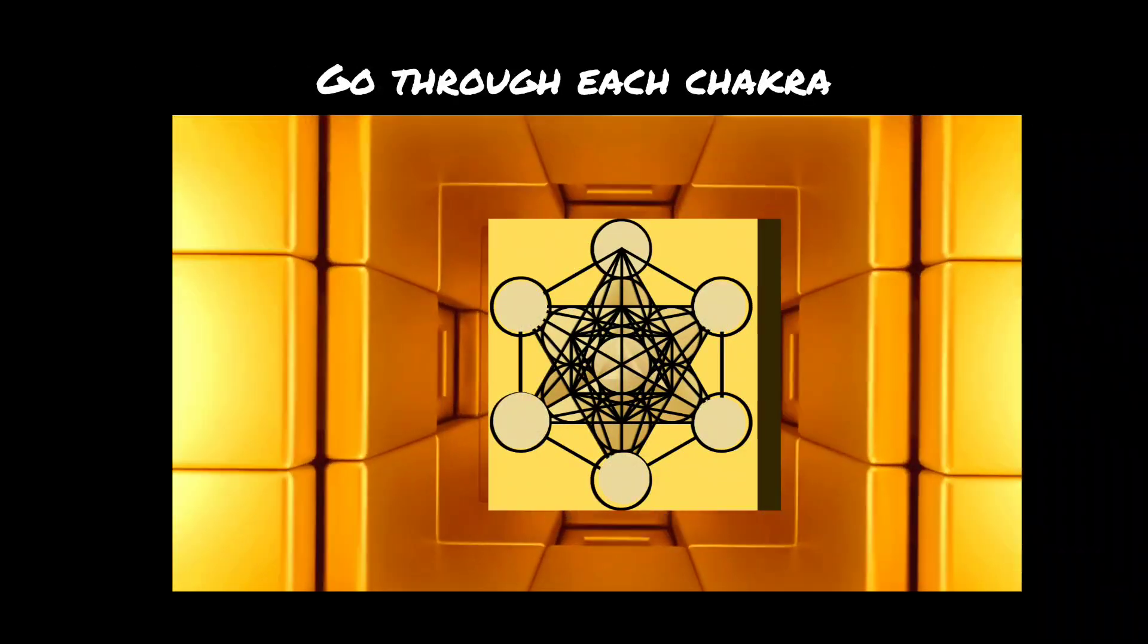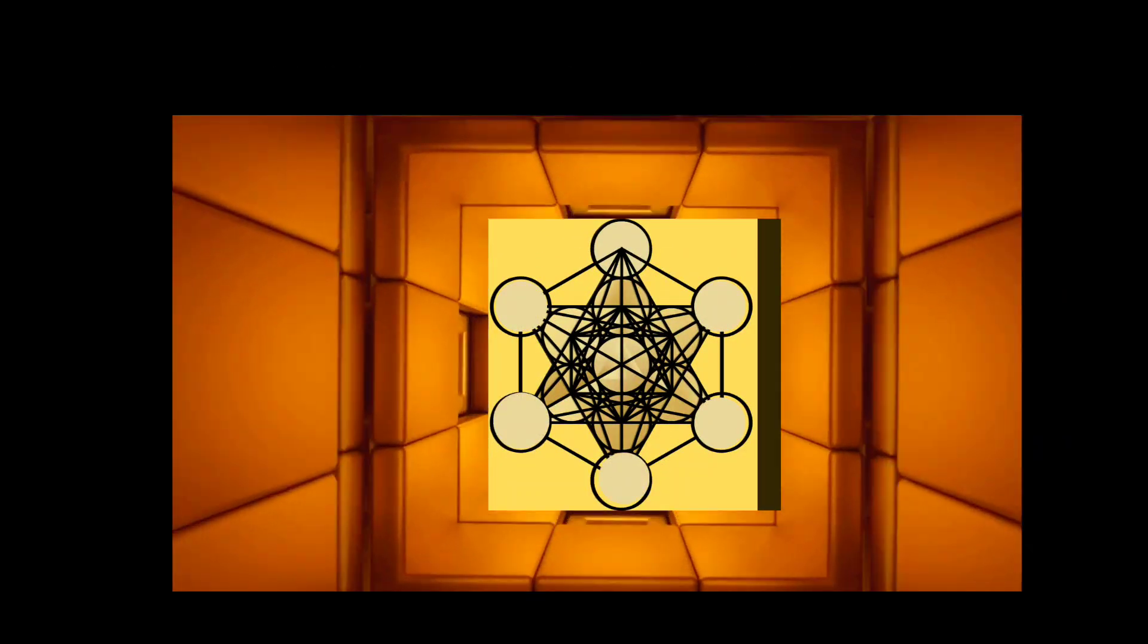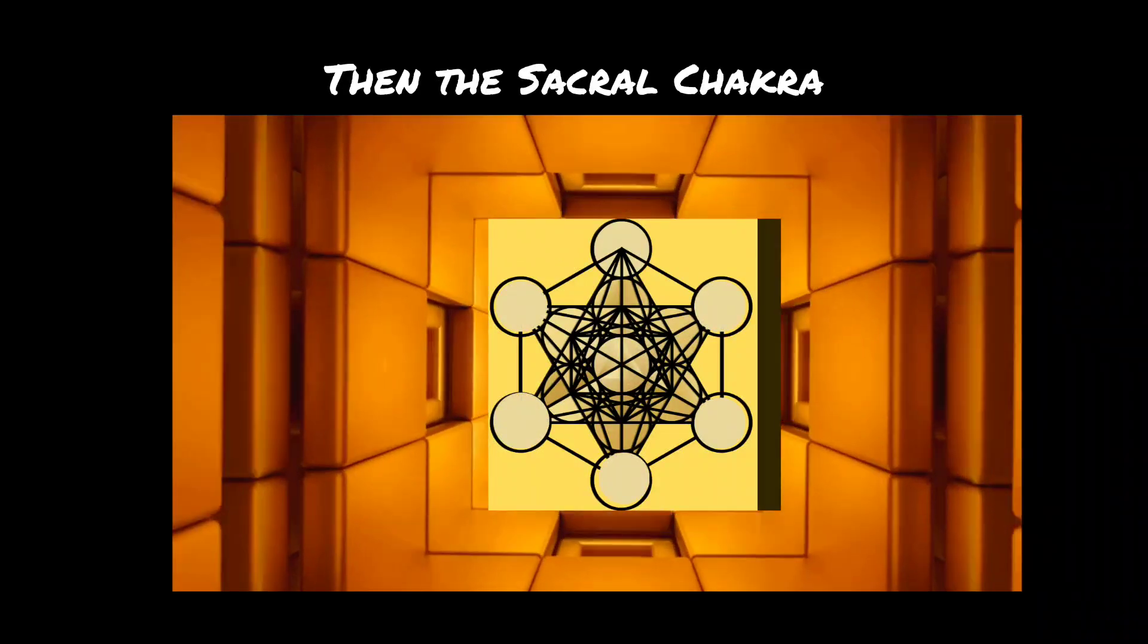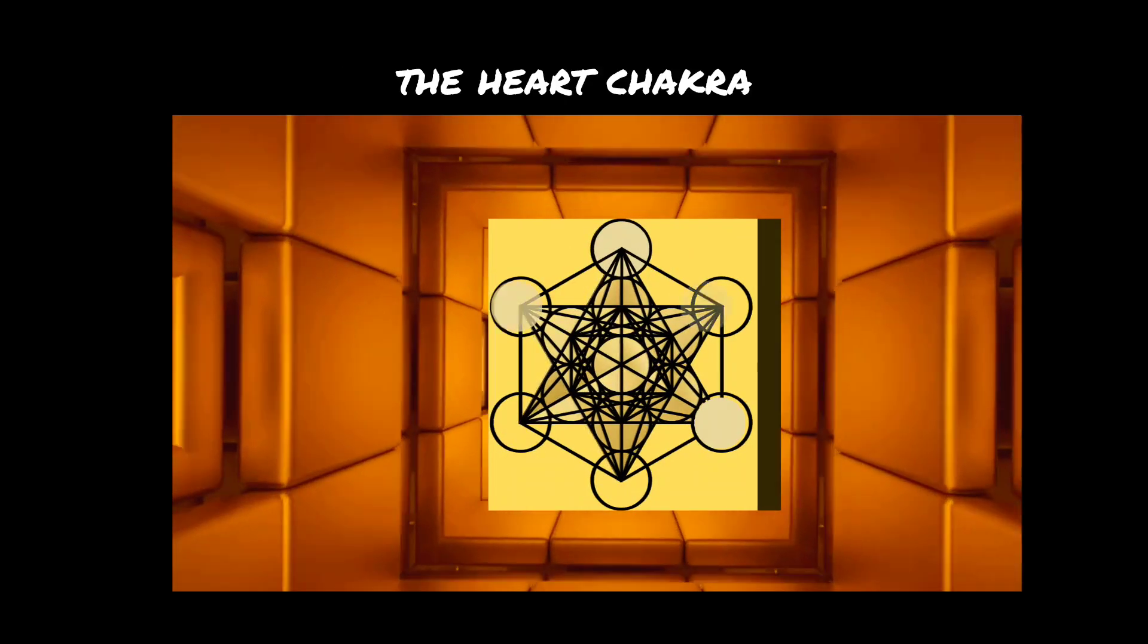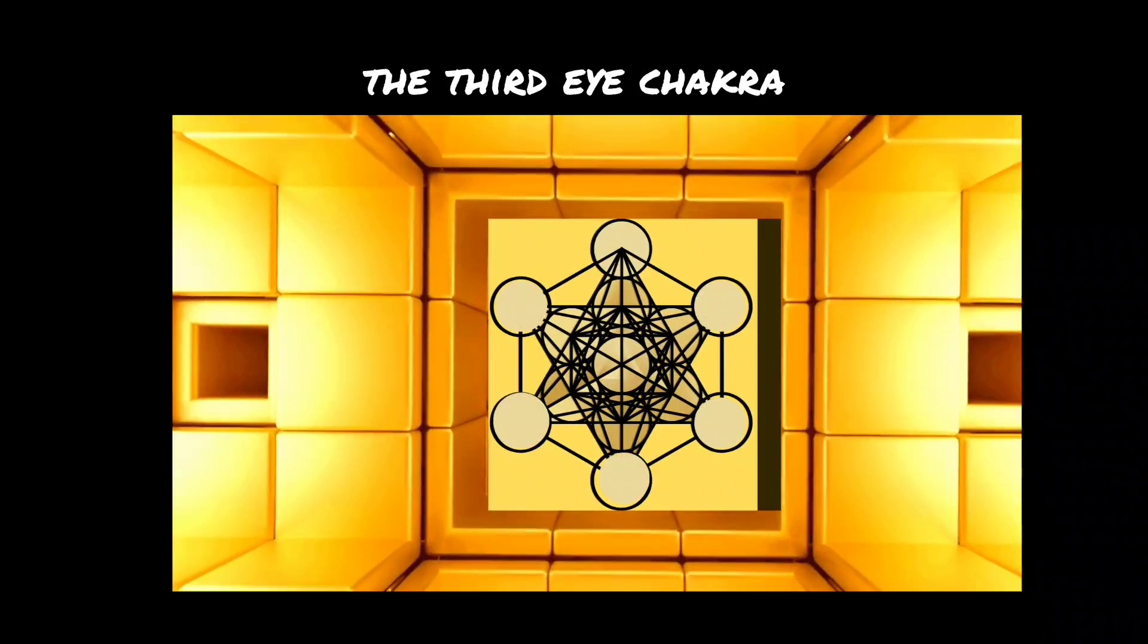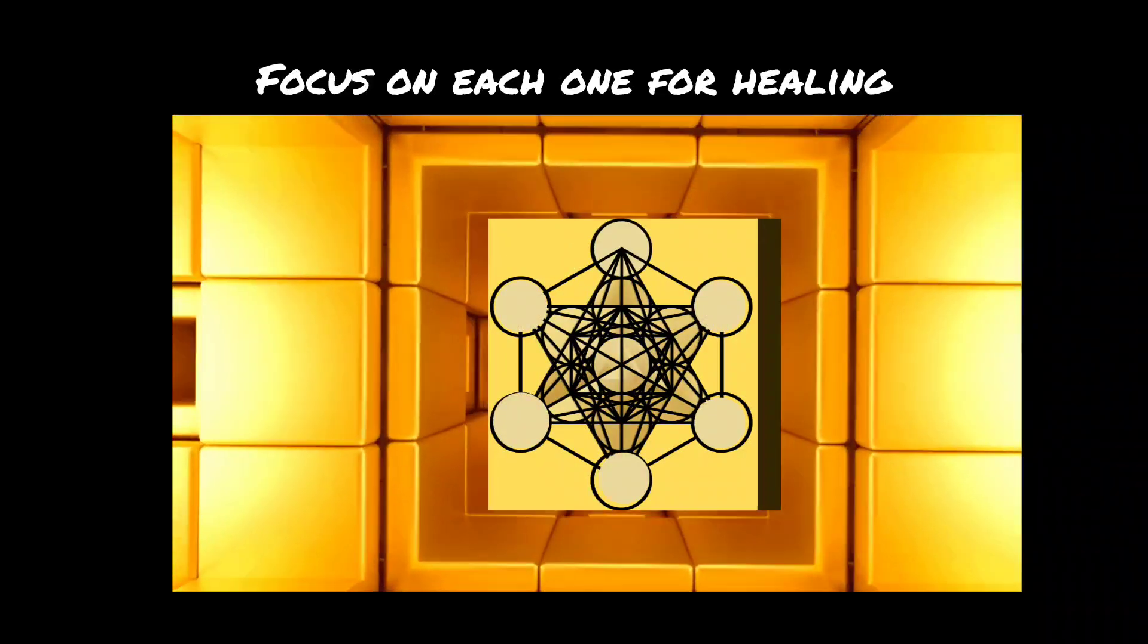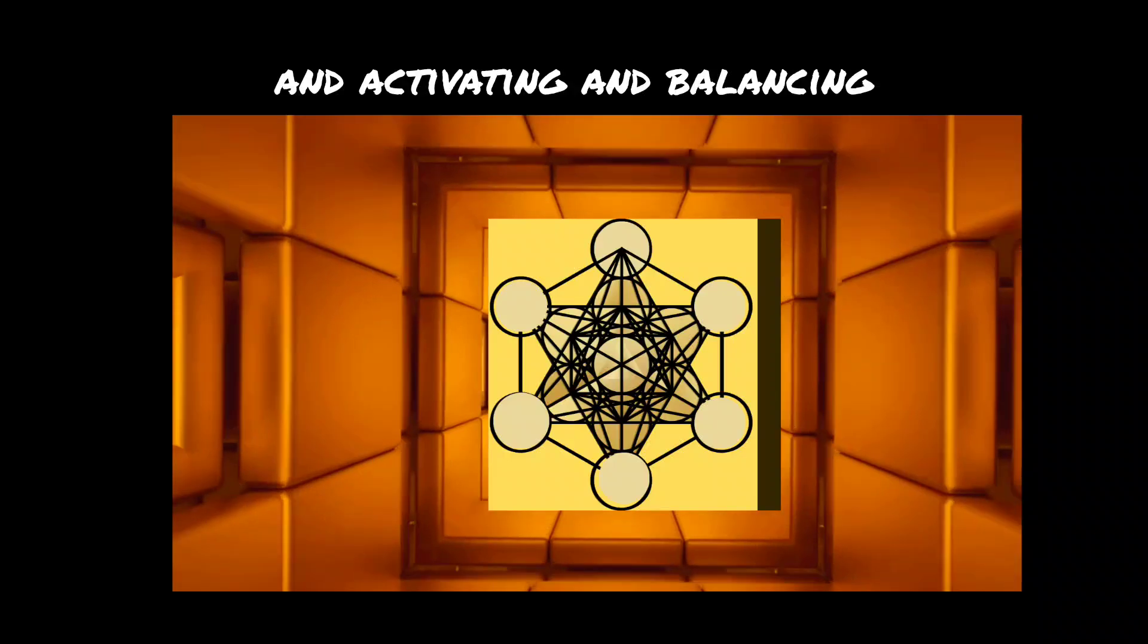Go through each chakra starting with the root chakra, then the sacral chakra, the solar plexus chakra, the heart chakra, the throat chakra, the third eye chakra, and the crown chakra. Focus on each one for healing, activating, and balancing.